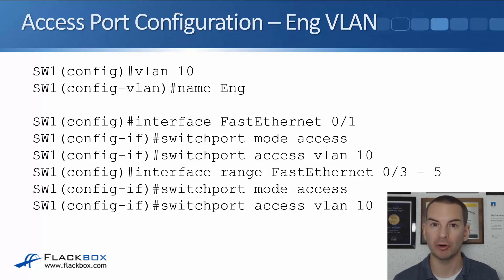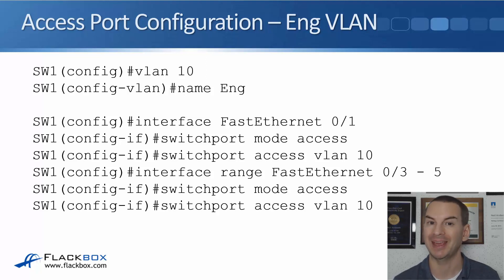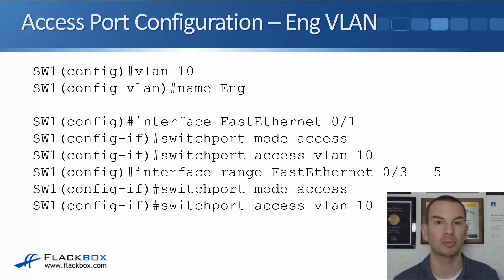Next we need to configure our switch ports as access ports in the correct VLAN. We say 'interface fastethernet 0/1', then 'switchport mode access' to make it an access port, and 'switchport access vlan 10'. If you're wondering about other types of ports — we can also have trunk ports, which we'll cover in the next lecture.